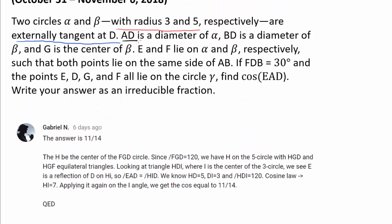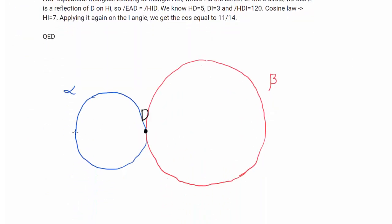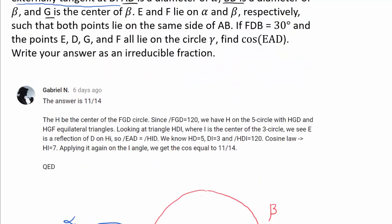We know AD is a diameter of alpha, BD is a diameter of beta, and G is the center of beta. So here is A and the center of alpha is right here. Here is D and center of beta is G located right there.